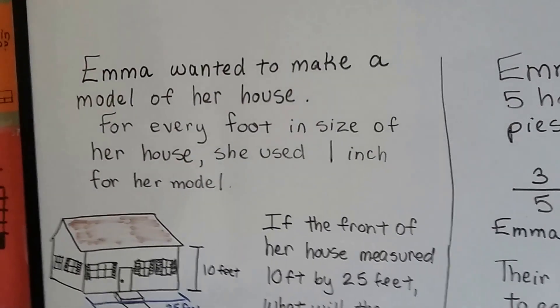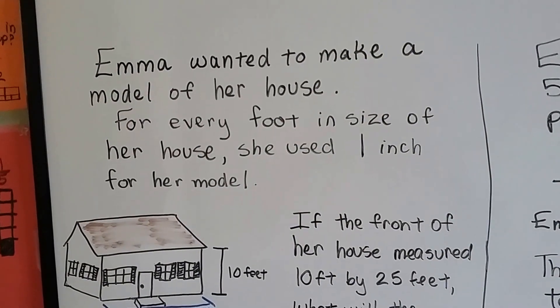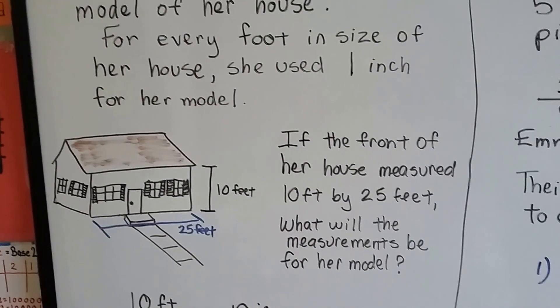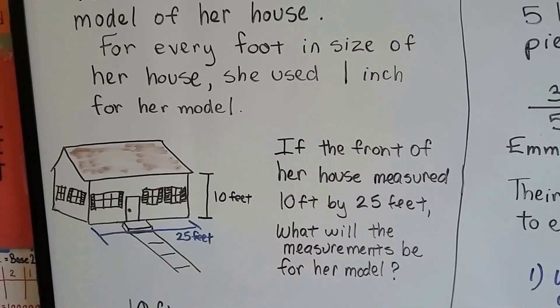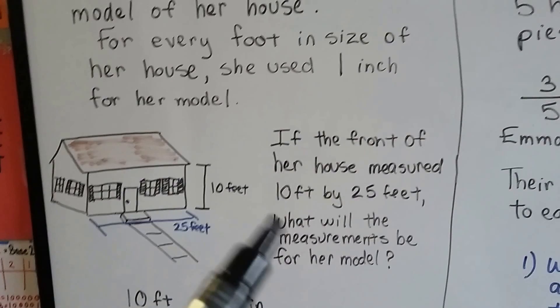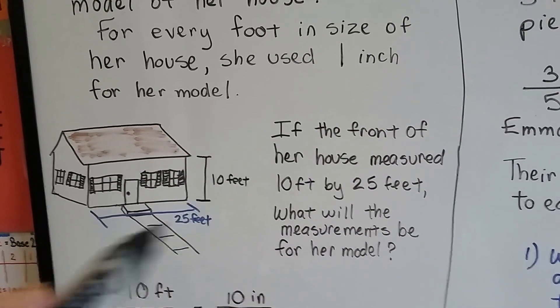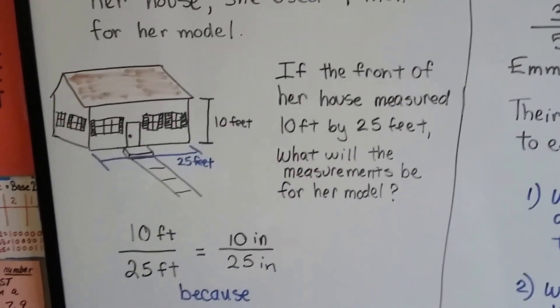Emma wanted to make a model of her house. For every foot in size of a real house, she used one inch for her model. That's kind of important. Every foot in the real house was one inch for the model. If the front of her house measured 10 feet tall and 25 feet across, what will the measurements for her model be?